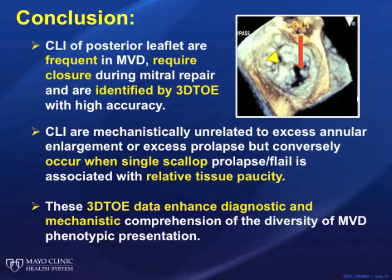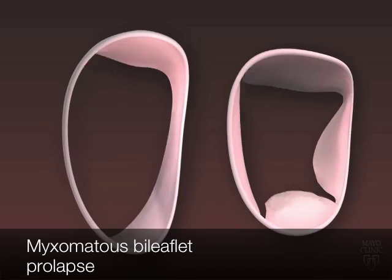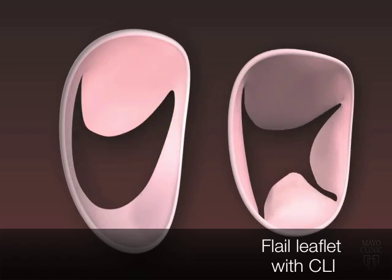Our conclusions are that cleft-like indentations of the posterior leaflets are frequent in myxomatous valve disease. They require closure during mitral valve repair and are identified by 3D transesophageal echocardiography with higher accuracy. Cleft-like indentations are mechanistically unrelated to excess annular enlargement or excess prolapse, but conversely occur when single-scallop prolapse or flail is associated with relative tissue paucity. This 3D data enhances the diagnostic and mechanistic comprehension of the diversity of myxomatous valve disease phenotypic presentation.